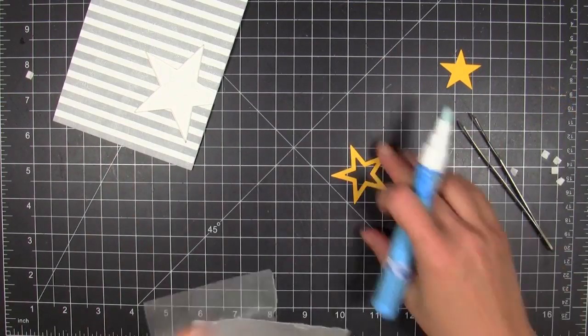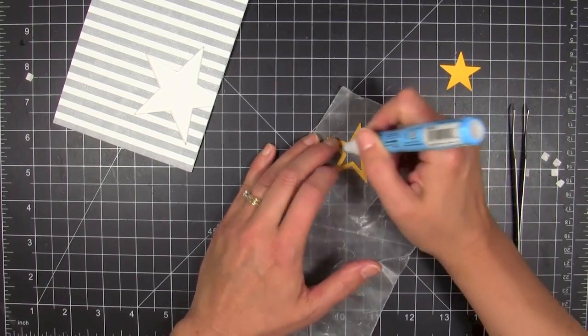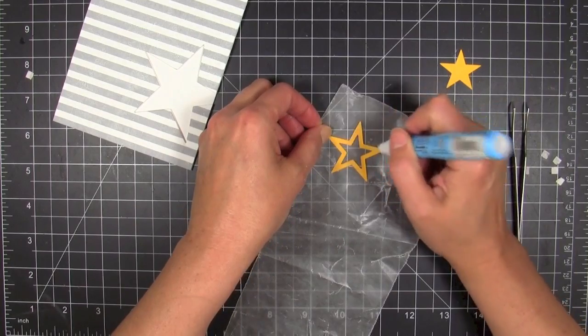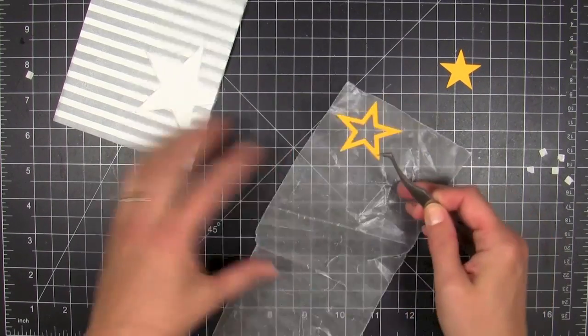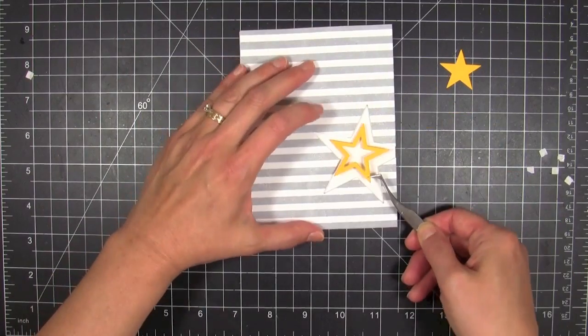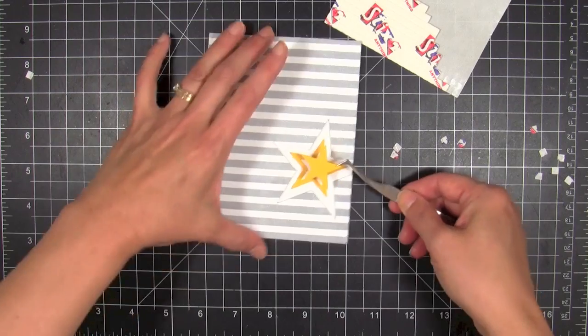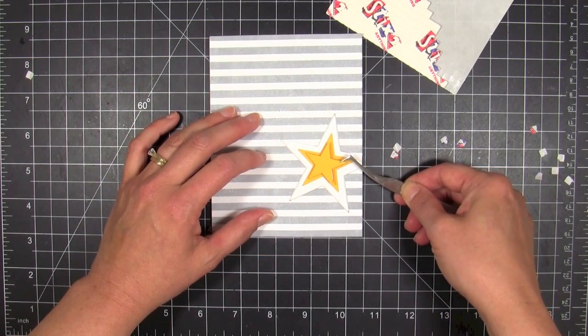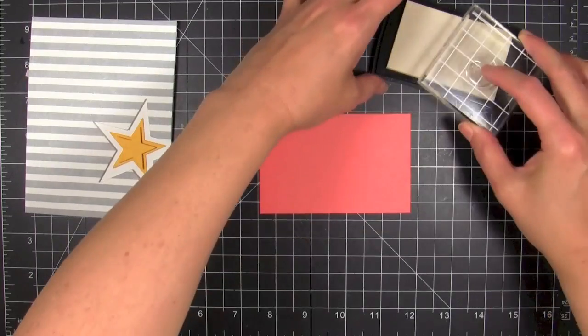Then I'm going to take this star and just use my two-way glue pen. I love this glue pen. I'm finding I'm using it more and more for different things. It's just a great glue pen. I had wax paper—I just grabbed a piece of wax paper because I wanted to not get glue all over my work surface.